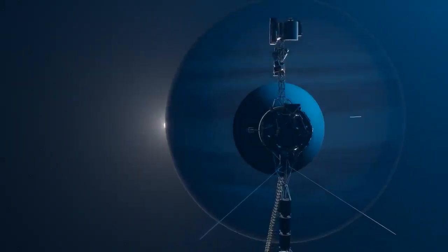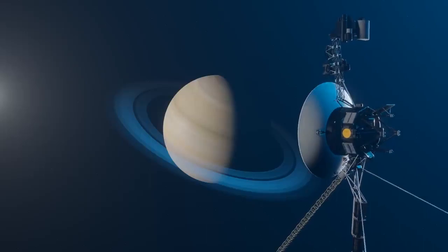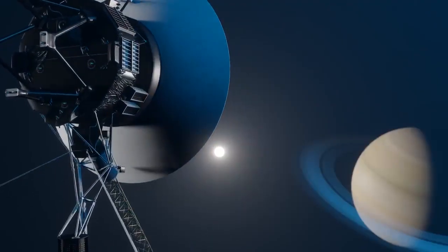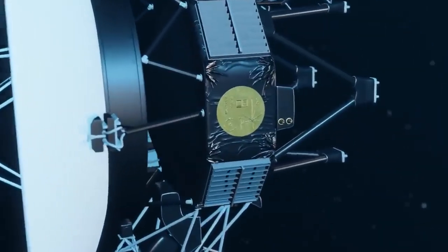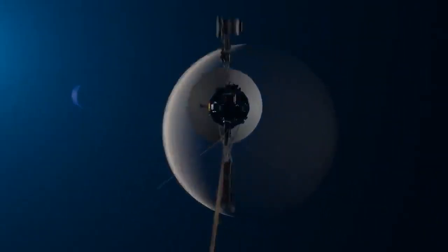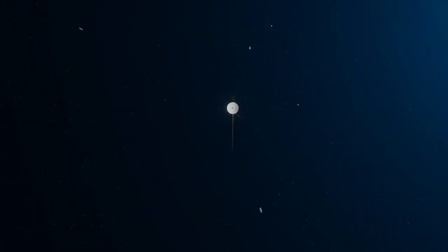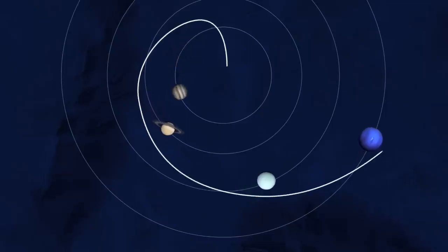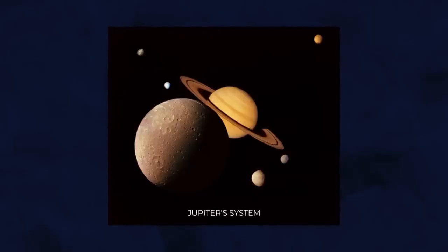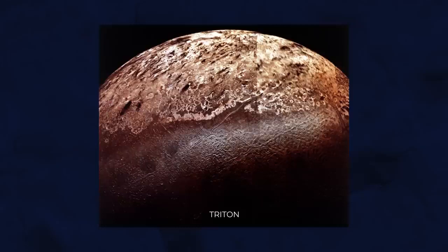Notably, in 1986, it made a historic close approach to Uranus, revealing previously unknown moons during the encounter. The probe also made significant discoveries regarding the potential presence of oceans beneath the icy surfaces of Europa and Enceladus, two moons of Jupiter and Saturn.